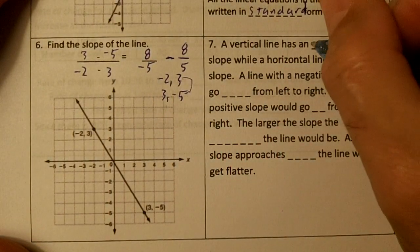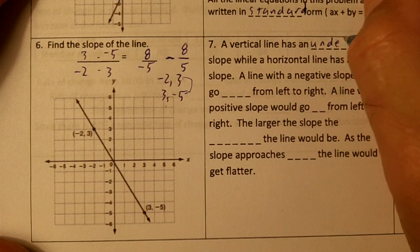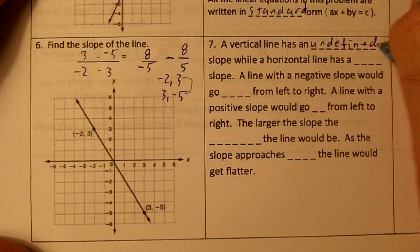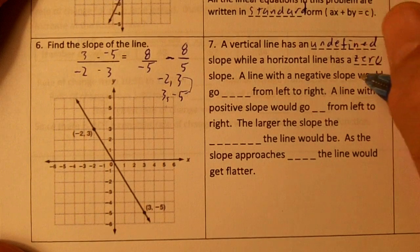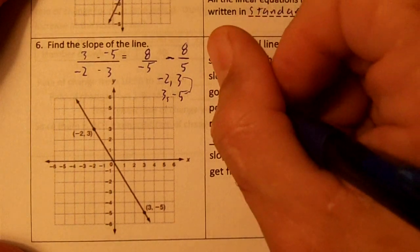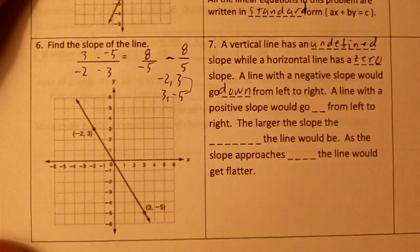A vertical line has an undefined slope while a horizontal line has a zero slope. A line with a negative slope would go down from left to right.